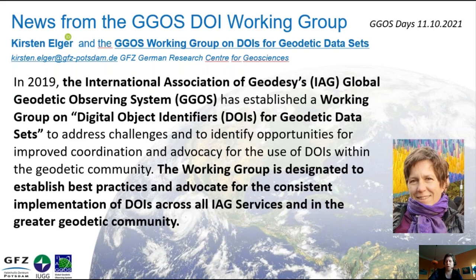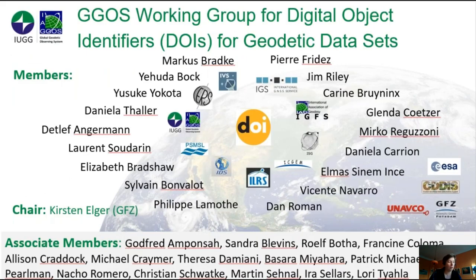We try to meet every second month. We had a longer pause, but we will have a next meeting in two weeks' time. The group includes 20 official members, which is the standard for GIGOS Working Groups, plus an increasing number of associate members, representing all IAG services and larger data centers that are using DOIs for their services.